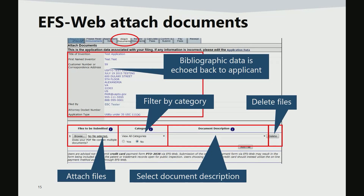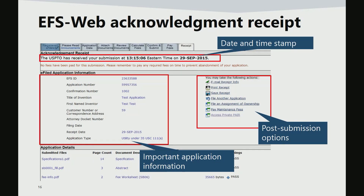On the attached documents tab, a summary of application data information can be viewed. At the bottom of the screen, applicants will be able to browse for files that they have already prepared. Selecting a category narrows down the document descriptions available for the selected application type. Once the application has been submitted, an acknowledgement receipt will be displayed with the application number and confirmation number. Those two numbers will allow applicants to file follow-on documents to the application.